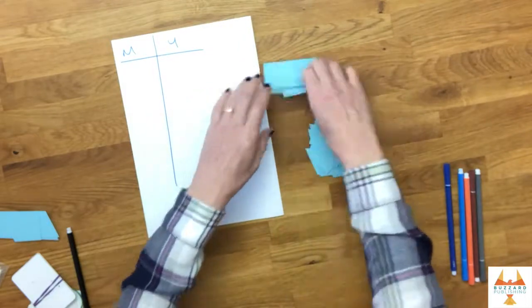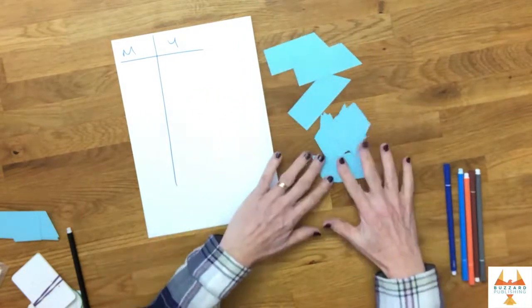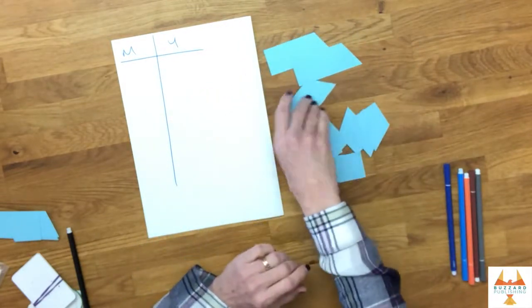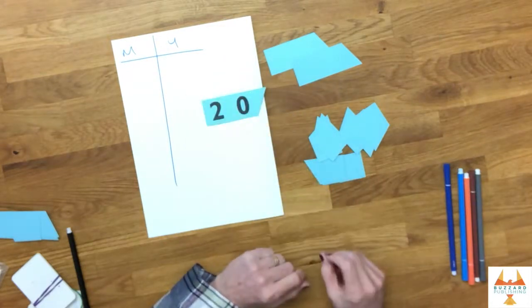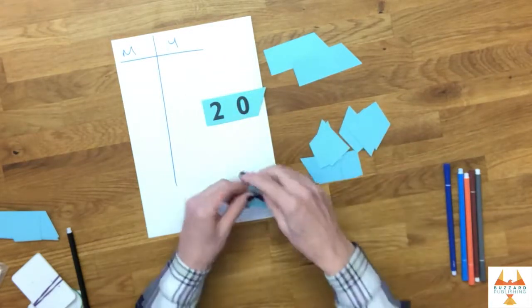We're going to put these face down, shuffle them around. So when it's my go I'm going to pick one of these cards, a tens card, I'm going to pick a ones card to make a two-digit number.